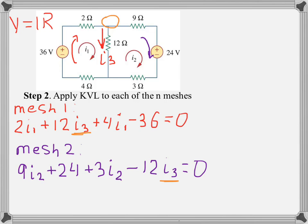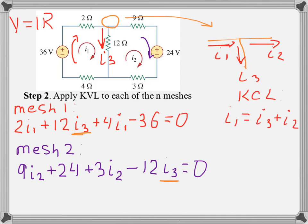If you look at the upper node, this is the node, and we have the mesh current I1 coming into the node. The mesh current I2 is going out from the node. So this is I2. And I3 is again going out. If we apply KCL for this node, we will see that I1 equals I3 plus I2, or we can express I3 as I1 minus I2.